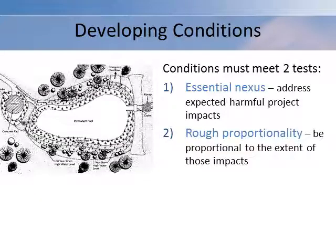Conditions must meet two tests. The first is the essential nexus test, which means that any conditions you attach must address expected project impacts. The second is the rough proportionality test, which means the conditions must be proportional to the extent of the impacts generated by the development. For example, for a large retail store, you could require the property owner to construct a retention pond to contain all stormwater on site. Assuming the pond is sized to accommodate the runoff generated by the development, this meets both tests.